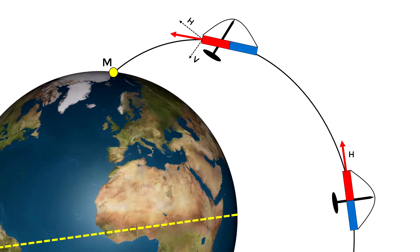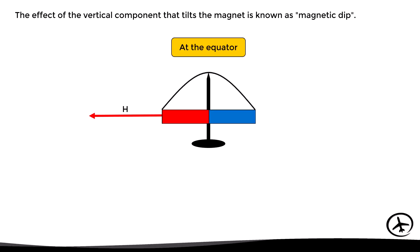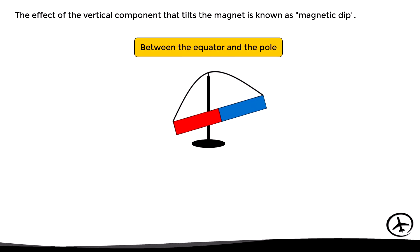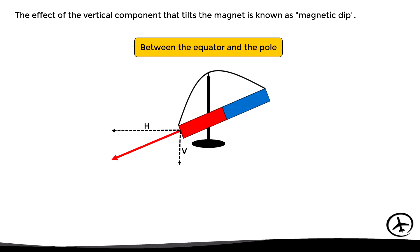However, if we place the compass far from the equator and closer to one of the poles, it will not only experience the horizontal force of the magnetic field but also a vertical component. This vertical component will cause the magnet to tilt around the pivot point. This tilting is known as magnetic dip, and it is not present at the equator. Between the equator and the poles, the magnet will tilt due to this vertical component.